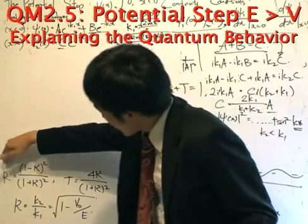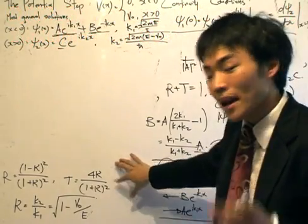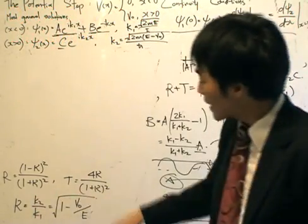Now we've got these expressions for the reflection coefficient and the transmission coefficient. They're written in terms of kappa, and kappa is written in terms of the potential and the energy.